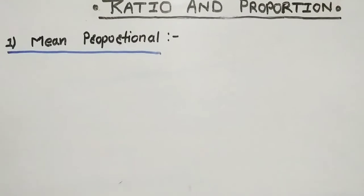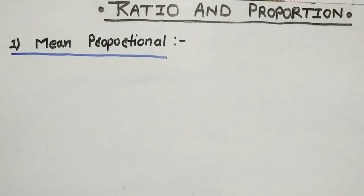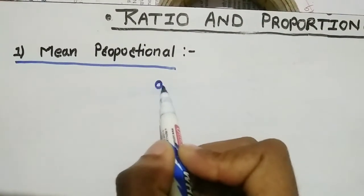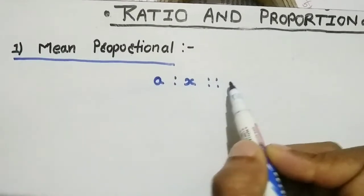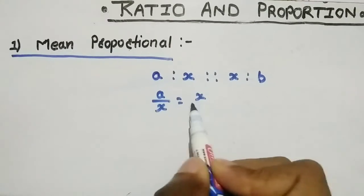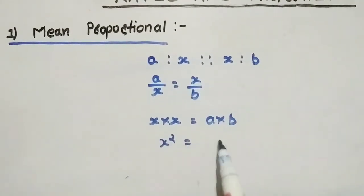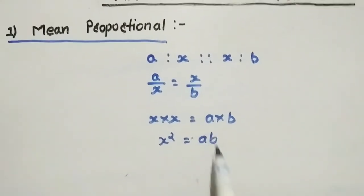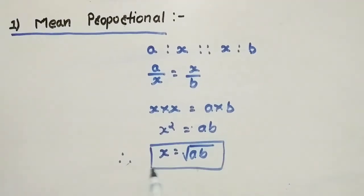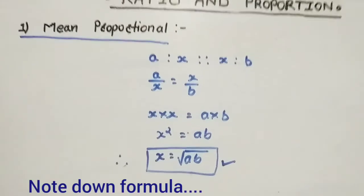Hello students, in today's class we are discussing ratio and proportional. We are discussing basic concepts such as mean proportional, third proportional, and fourth proportional. So firstly, mean proportional: if a is to x proportional to x is to b, then a divided by x equals x divided by b, so x squared equals a times b, meaning x is equal to the square root of ab. This is the formula for mean proportional.